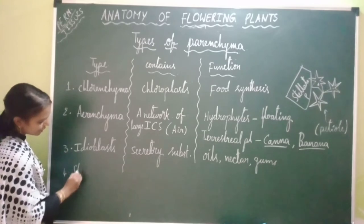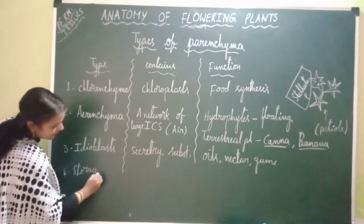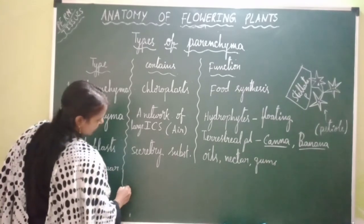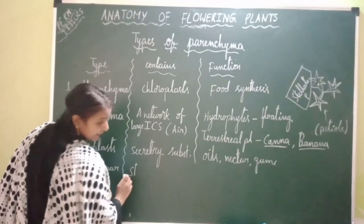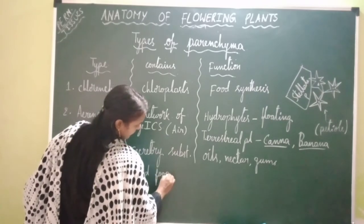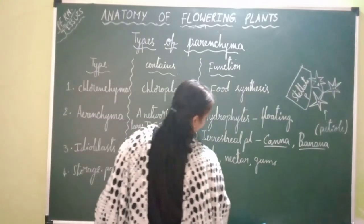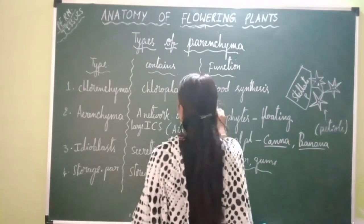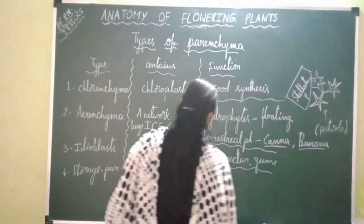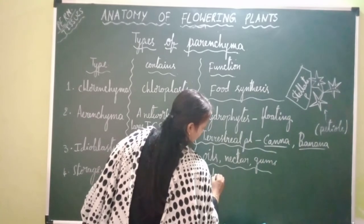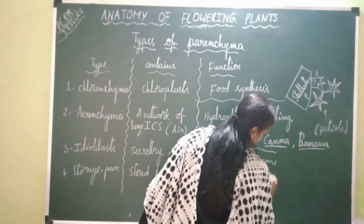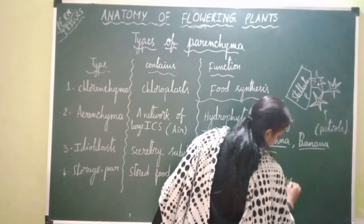The next type of parenchyma is storage parenchyma. It is involved in the storage of food and contains stored food. For example, the endosperm of a seed is storage parenchyma — it stores food for the developing embryo.